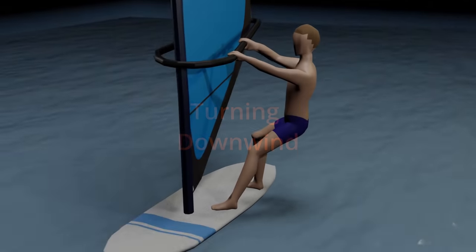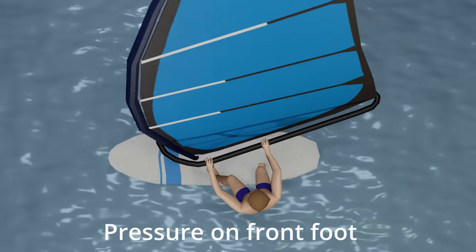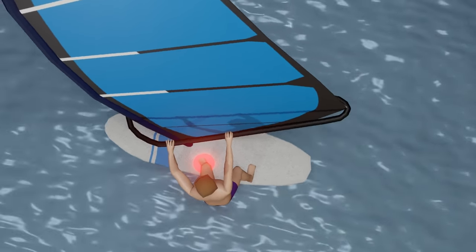So to turn downwind, it's very similar. You tip the sail slightly forward, which puts pressure on your front foot. This pushes the nose or the bow of the board downwind.